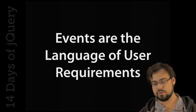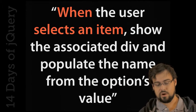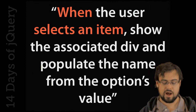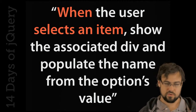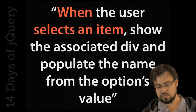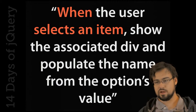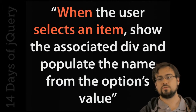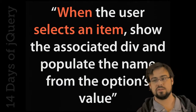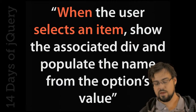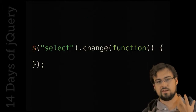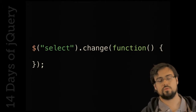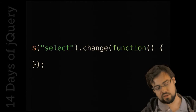Events are also the language of user requirements. The select box example could be described as: 'when the user selects an item, show the associated div and populate the name from the option's value.' The beginning of that requirement is 'when the user selects an item' — that's an event. You think about the problem as describing all the things the user might do and what should happen in response. This is why you like jQuery: it makes reflecting that requirement in code trivial — just $select.change(function(){...}).